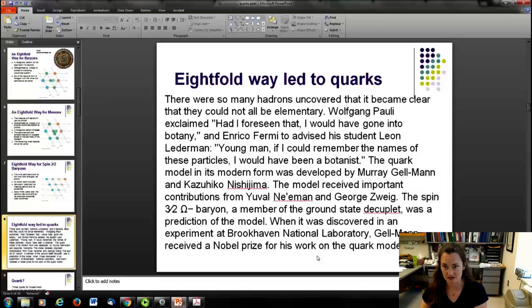So there were so many hadrons uncovered, you saw the chart and that's not even all of them, that it became clear that they couldn't all be elementary. Some of the physicists at the time actually found this very frustrating. Wolfgang Pauli exclaimed, 'Had I foreseen that, I would have gone into botany.' And Enrico Fermi actually advised his student, Leon Letterman, 'If I could remember the names of these particles, I would have been a botanist,' just because of all the great skill that botanists have in memorizing names. So the quark model in its modern form was developed by Gell-Mann and Nishijima. And the model received important contributions from Neeman and Zweig. So the spin three-half omega minus baryon, which is a member of the ground state decuplet, was a prediction of the model. And when it was discovered in an experiment at Brookhaven National Laboratory on Long Island, Gell-Mann received his Nobel Prize for his work on the quark model.